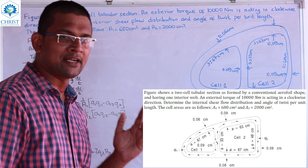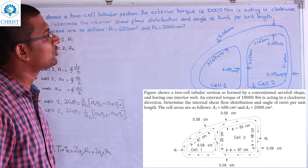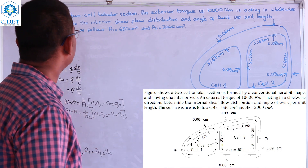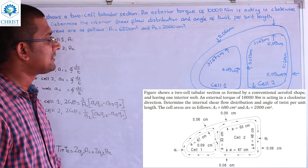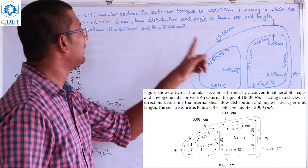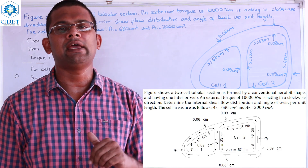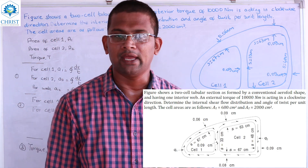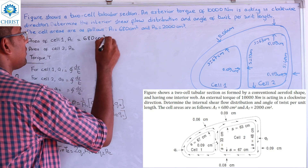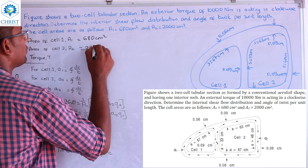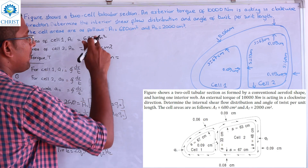This is the ninth problem in the tutorial book. The figure shows a two-cell tubular section with an exterior torque of 10,000 Newton-meter acting in the clockwise direction. Determine the interior shear flow distribution and angle of twist. Given values: Cell 1 area is 680 cm², Cell 2 area is 2,000 cm². The torque value is 10,000 Newton-meter.